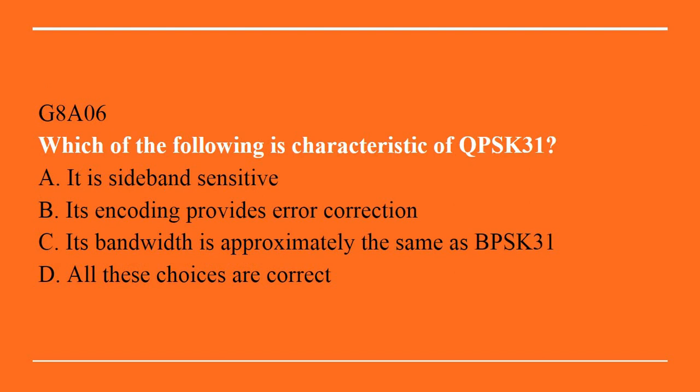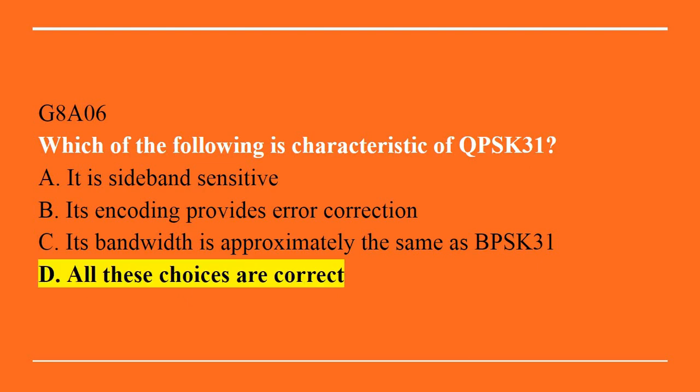G8A06: Which of the following is a characteristic of QPSK31? A. It is sideband sensitive. B. Its encoding provides error correction. C. Its bandwidth is approximately the same as BPSK31. D. All of these choices are correct. Answer is D. All of these choices are correct.